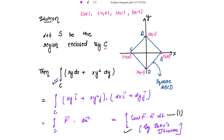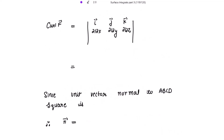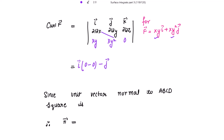Now finding the curl of F vector. We have F vector = xy·i + xy²·j, so the components are xy, xy², and 0. Evaluating: the i and j components are zero, and the k component gives partial derivative of xy² with respect to x minus partial derivative of xy with respect to y, which is y² minus x. So curl of F = (y² - x)·k vector.